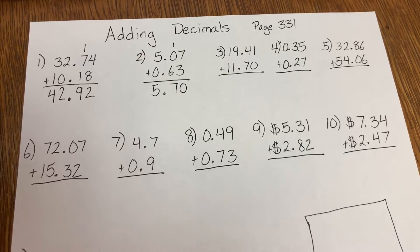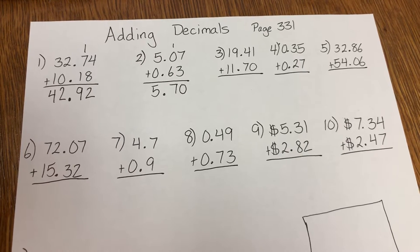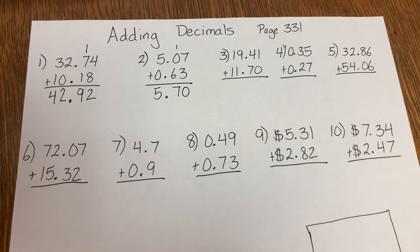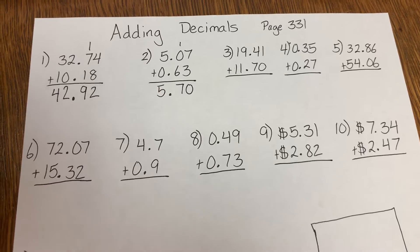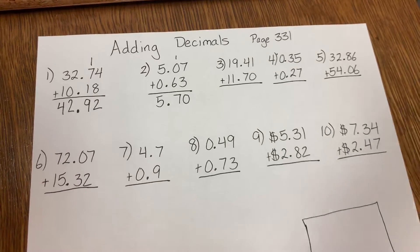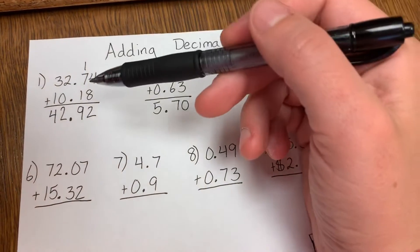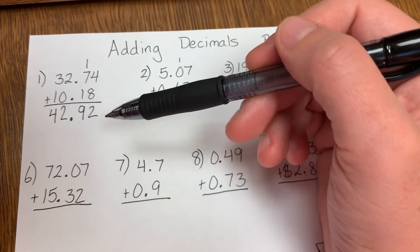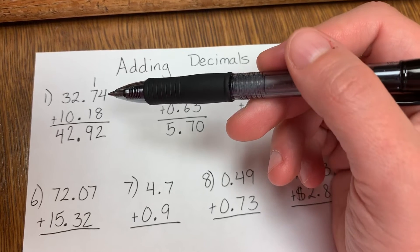When you're adding decimals, it's pretty much just like when you add money. Because when we add money, it also has decimal points. So you just need to make sure you align your numbers and align your decimals. I'm going to do these with you. I've already finished number 1 and 2 because I started my video and made a mistake earlier, so I wanted to start over.